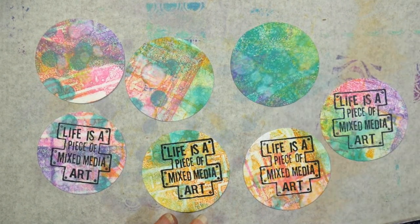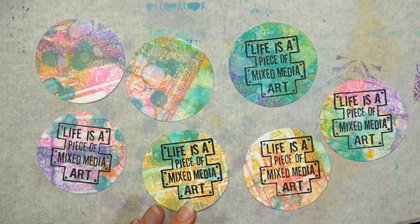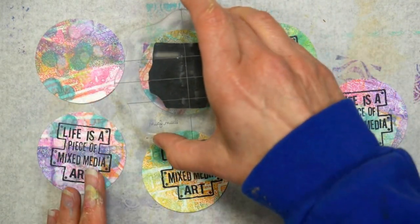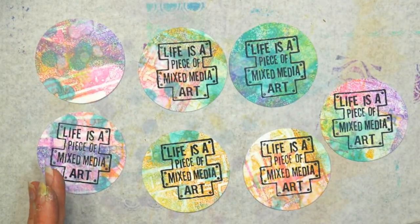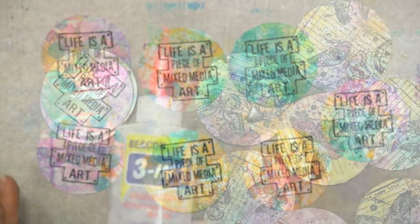On the back I'm stamping on the saying that says 'life is a piece of mixed-media art' because I thought it was really fitting for this. Then all I'll do after this is just write my name and date it, so that way when I trade it with somebody they'll know where they got it from.